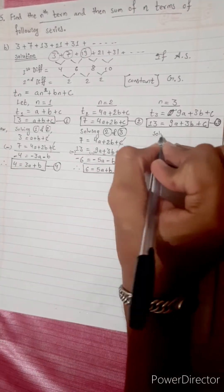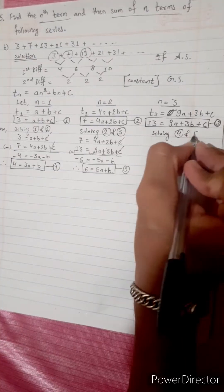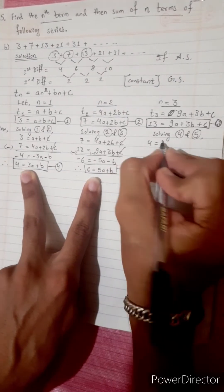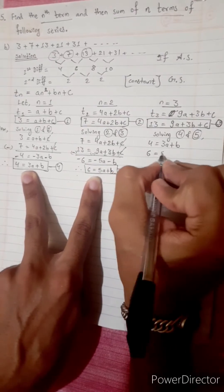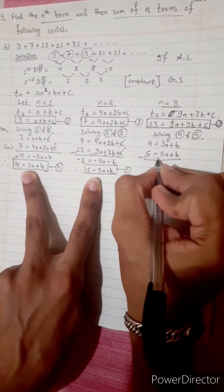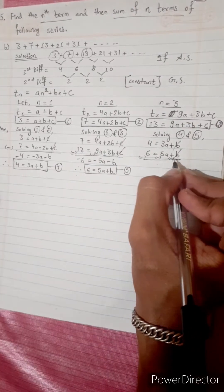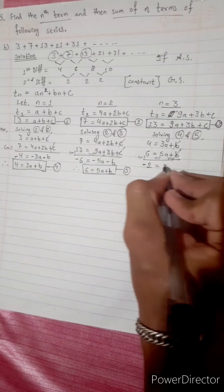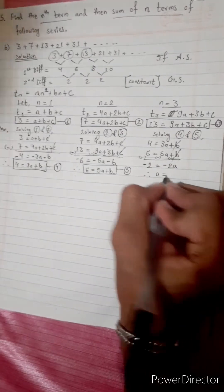Solving equations 4 and 5: equation 4 is 4 equals 3a plus b, and equation 5 is 6 equals 5a plus b. Subtracting: b cancels. 4 minus 6 equals negative 2, which equals negative 2a. Therefore, a equals 1.